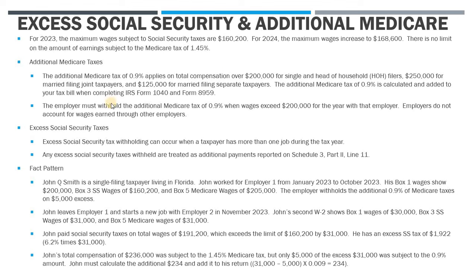The additional Medicare tax is an extra 0.9% on your total compensation if it's over $200,000 for single filers and head of household filers, $250,000 for married filing joint taxpayers, and $125,000 for married filing separate taxpayers.